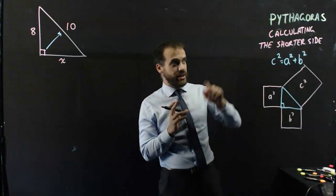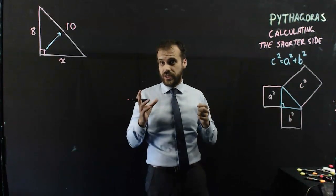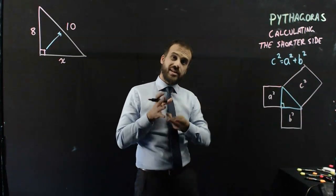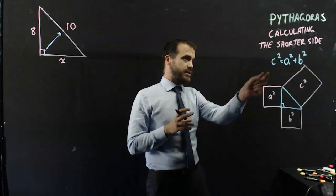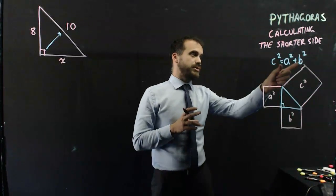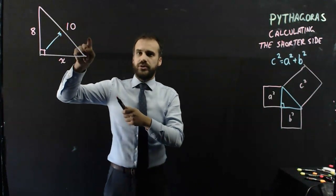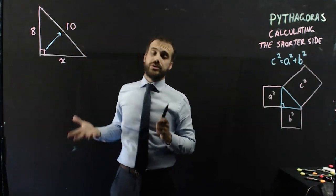So in this video we're going to be using Pythagoras to calculate the shorter side. We've already figured out how to do the hypotenuse and the formula that we have is kind of set up to find the hypotenuse. It says the hypotenuse squared is equal to these things here. But in this question, I already know the hypotenuse and the thing that I want to do is find the shorter side.